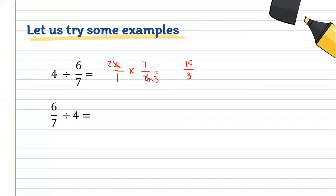Let's change 14 over 3 into a mixed number. How many 3s are in 14? We have 4 — because 3, 6, 9, 12 — so the quotient is 4. 4 times 3 is 12, and 14 minus 12 is 2. So the 4 becomes the whole number, 3 becomes the denominator, and 2 becomes the numerator. Our final answer is 4 and two-thirds.